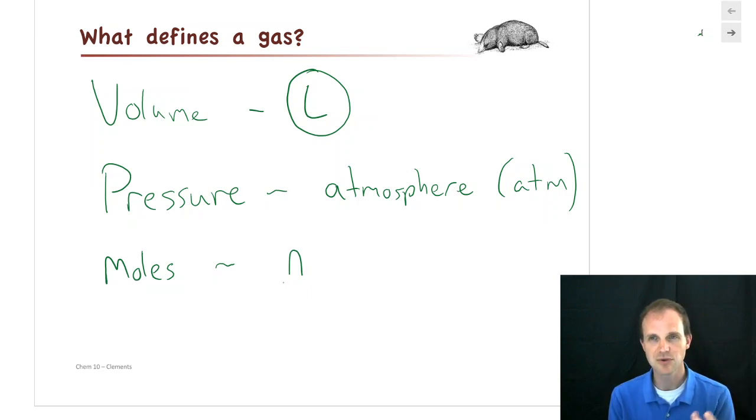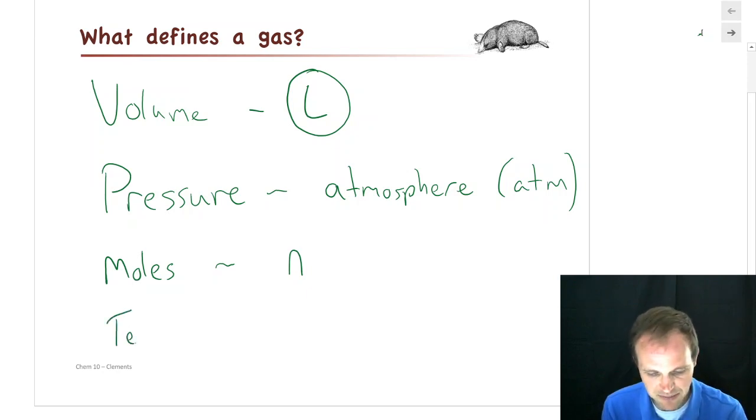Volume, pressure, moles. Well, how hot is it? Is the gas really hot? Are we talking about a superheated gas? Are we talking about a really cold gas? Well, can you have really cold gas? Yeah. Helium is still a gas at like minus 200 degrees Celsius. So yes, you can have very, very cold gases. So temperature is the other variable that we worry about.